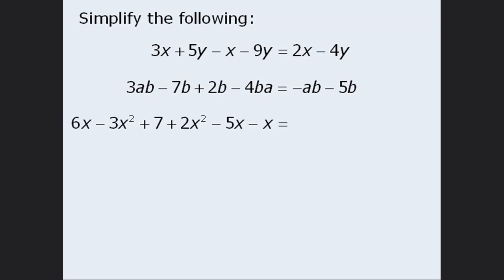For this last one, let's first collect the terms with x squared. We have negative 3x squared and we're going to add 2x squared, which equals negative 1x squared, or simply negative x squared.